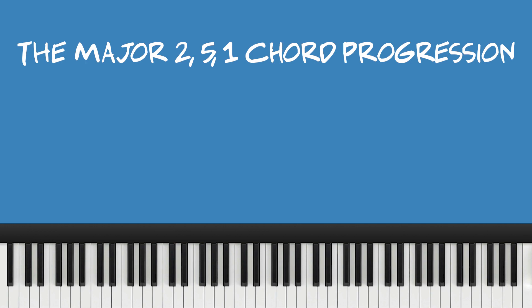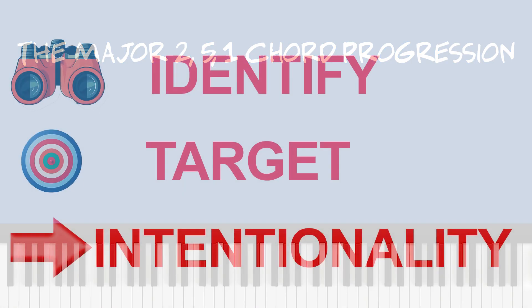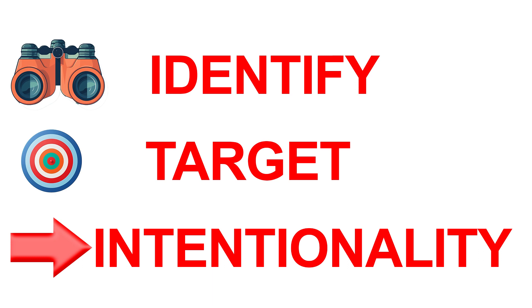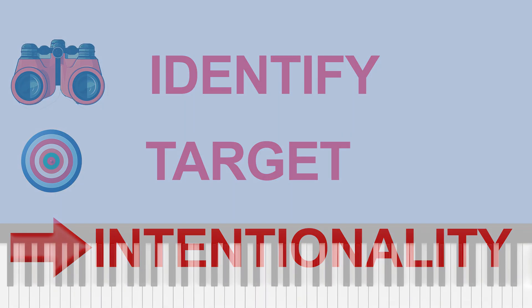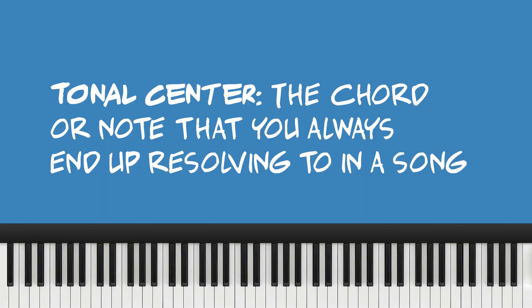It's more than just changing keys in the middle of a song. It's more about intentionality and identifying whatever your target chord is, and forming your 2-5-1 chord progression in the key of the target chord. Doing this shifts the tonal center, creating a more textured and colorful chord progression. You can think of the tonal center as the anchor of a song — the note that sounds the most stable and provides a sense of rest or resolution.